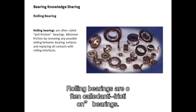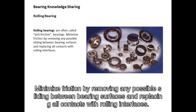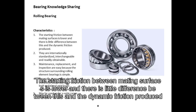Rolling bearings are often called anti-friction bearings. They minimize friction by removing any possible sliding between bearing surfaces and replacing all contacts with rolling interfaces. The starting friction between mating surfaces is lower, and there is little difference between this and the dynamic friction produced.